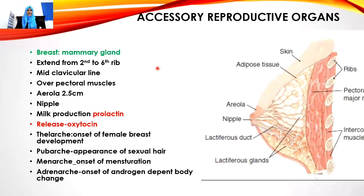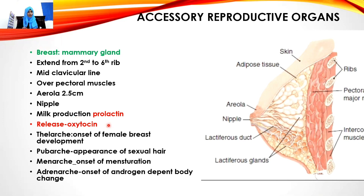The accessory sex reproductive organ of the female is the breast or mammary gland. It extends from the second rib to the sixth rib, lying over the mid-clavicular line over the pectoral chest muscle. The blackish or brownish discoloration is called the areola, covering 2.5 centimeters. The projection of the breast is called the nipple. Milk production is done by prolactin, and milk release is done by oxytocin.